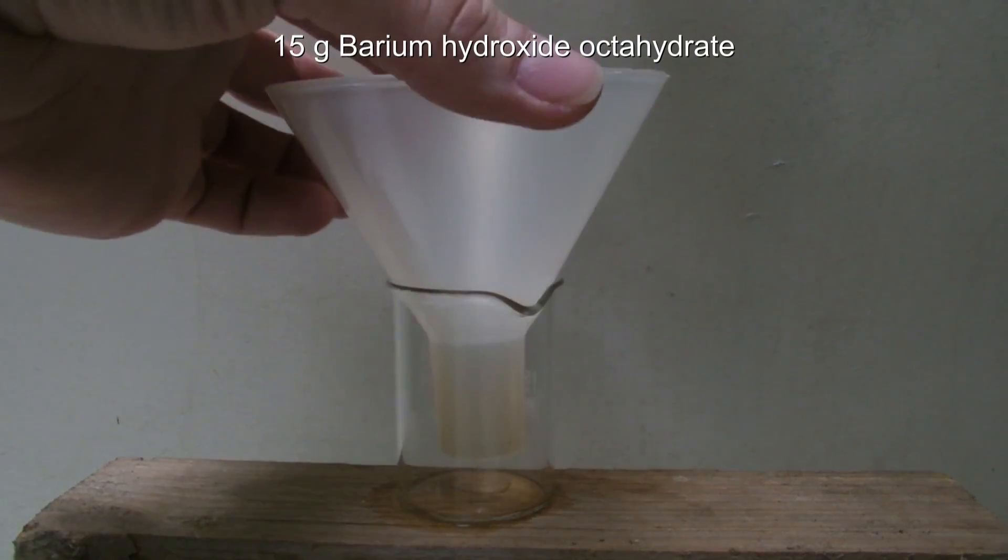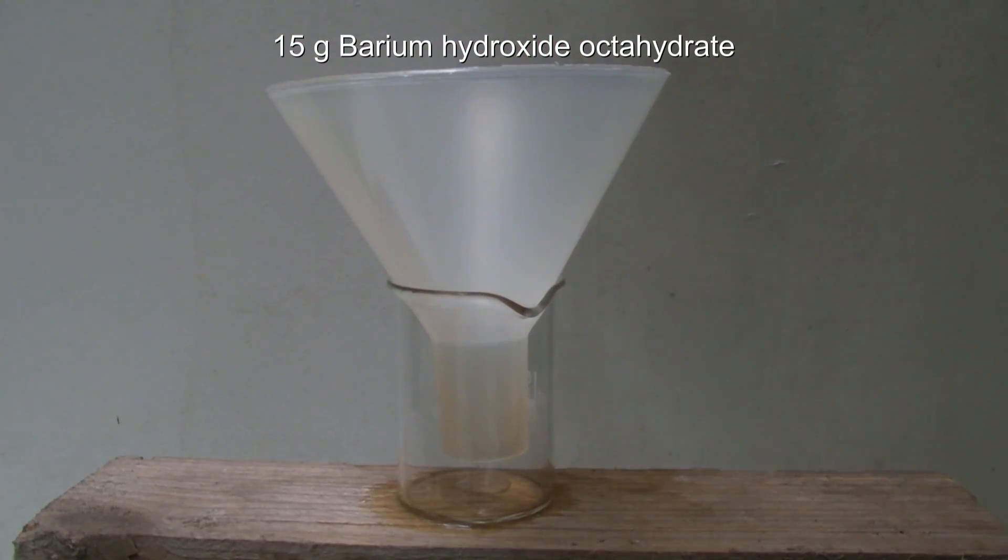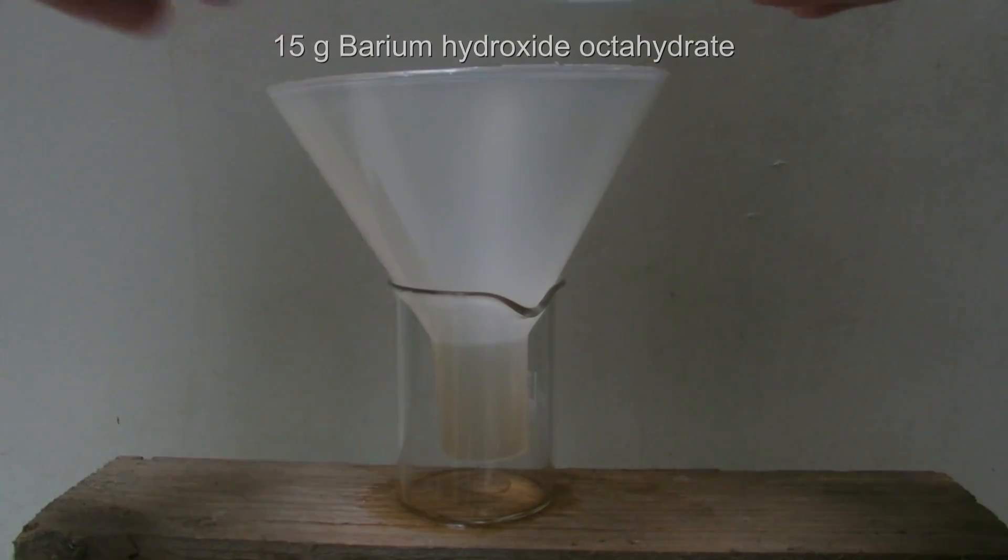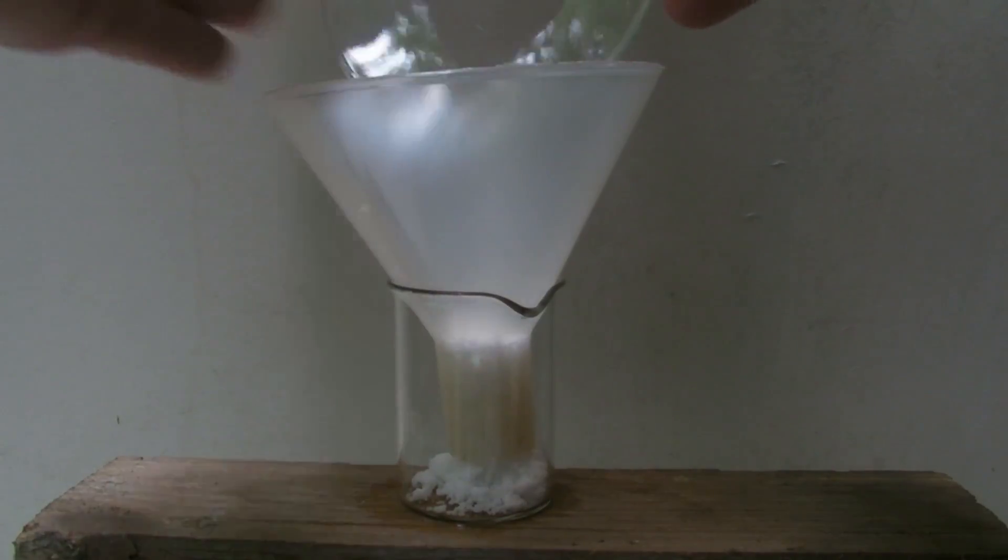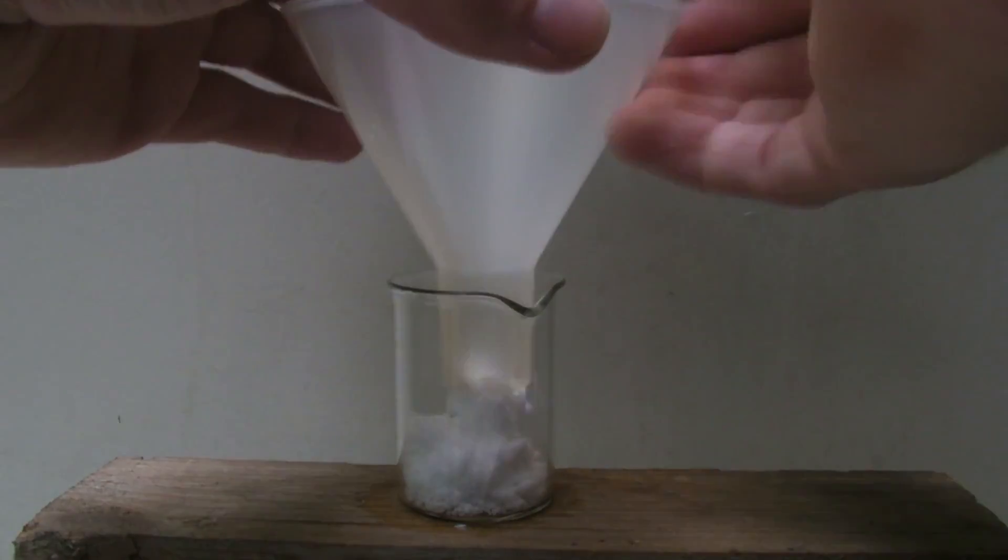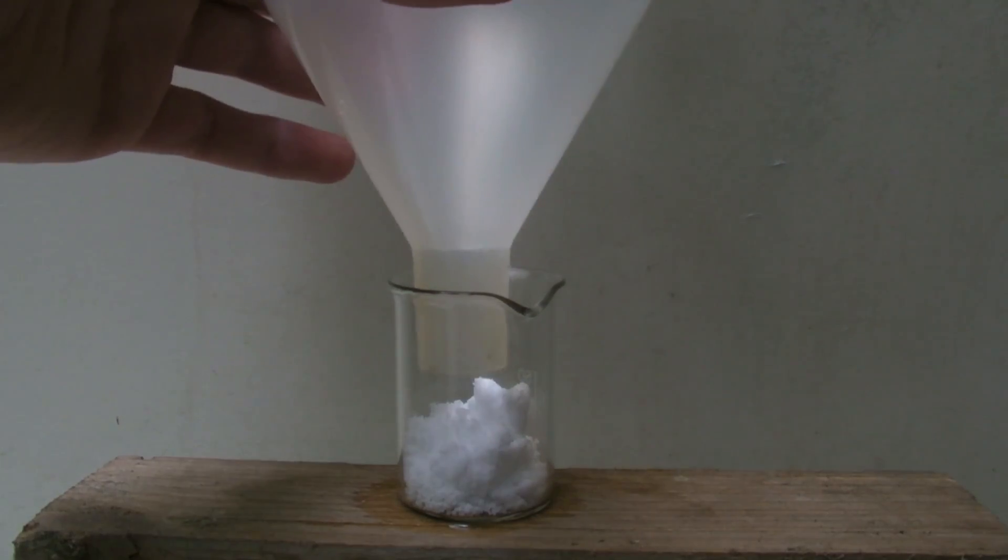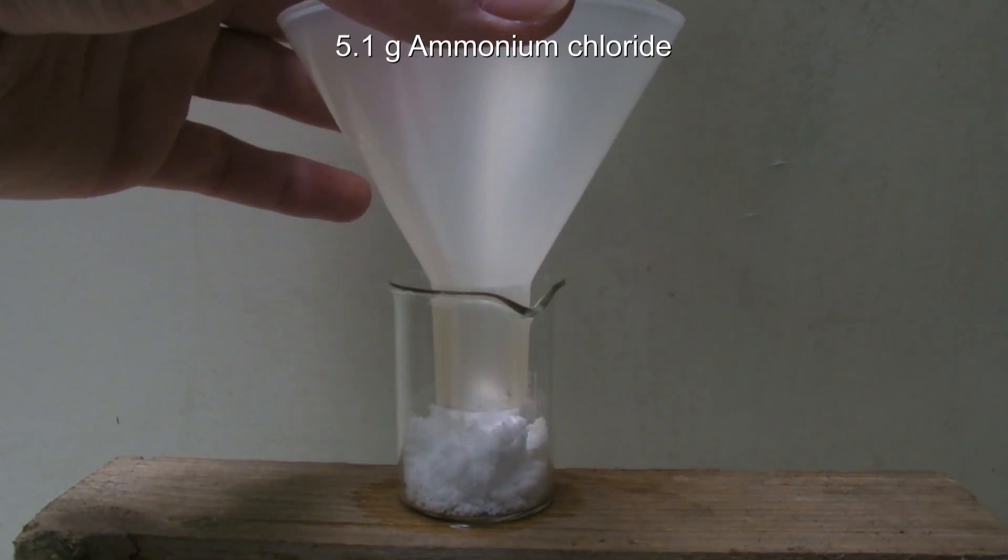Next 15 grams of barium hydroxide octahydrate are added to the beaker. On top of the barium hydroxide 5.1 grams of ammonium chloride are added.